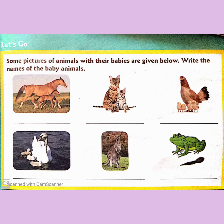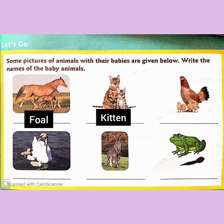Let's write names of the baby animals. First one, horse — the baby is called a foal. Second, cat — the baby is called a kitten.